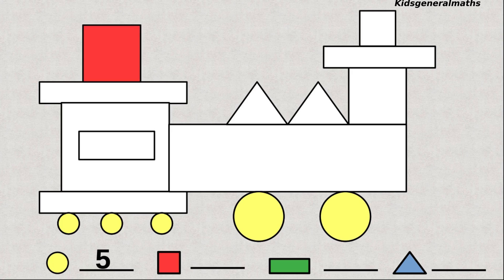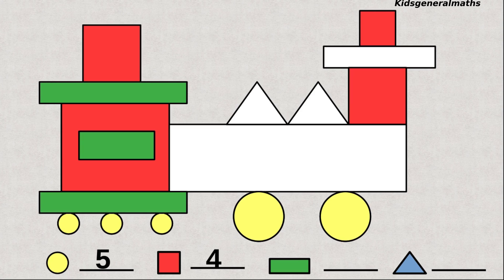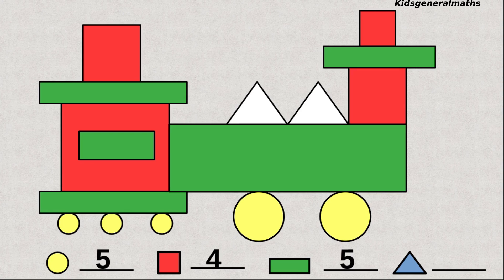Next we are going to count the squares. 1, 2, 3, 4, 5. So how many squares? 4 squares. Next rectangles. 1, 2, 3, 4, 5. How many rectangles? 5 rectangles.